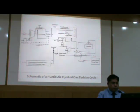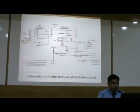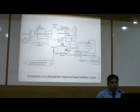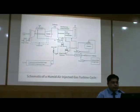This is another configuration used in the mixed cycle plants. Here you may observe a train of compressors for the production of compressed air. This compressed air is mixed with steam to form humid air, which in turn is passed through the HRSG and fed into the combustion chamber.